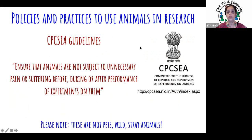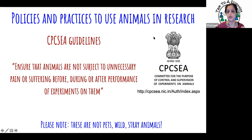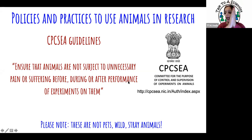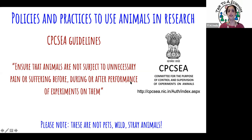Using animals is certainly not trivial, and there are very strong policies and practices in place to ensure animals are used in the right manner. This constitutes a guideline called the Committee for the Purpose of Control and Supervision of Experiments on Animals — CPCSEA — a national guideline from the Government of India. Every institute that uses animals must also have its own guideline, to ensure animals are not subject to unnecessary pain or suffering during, before, or after experiments.